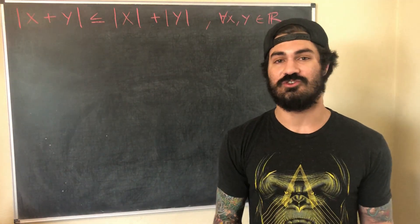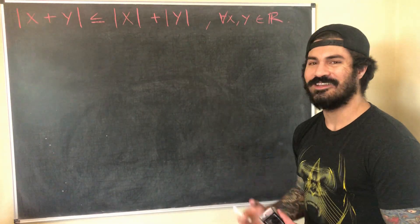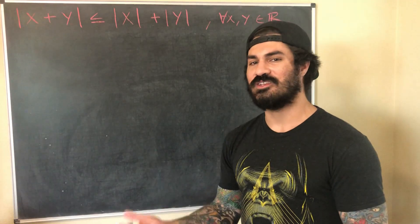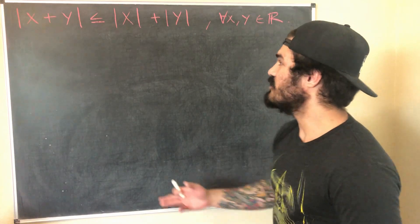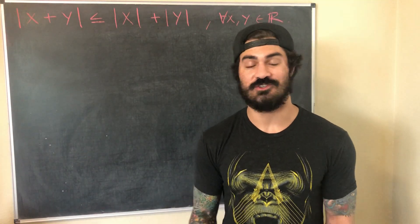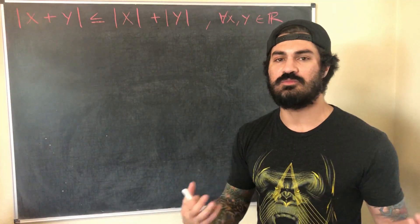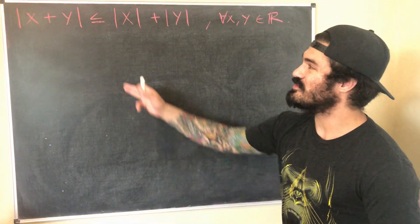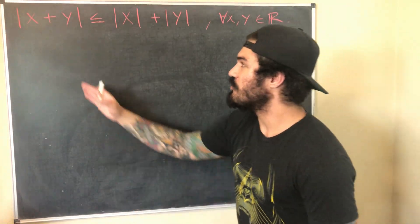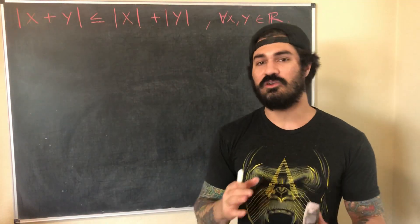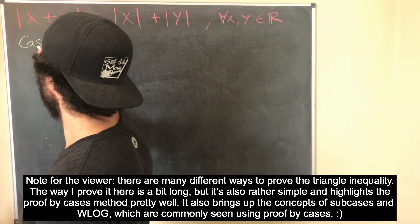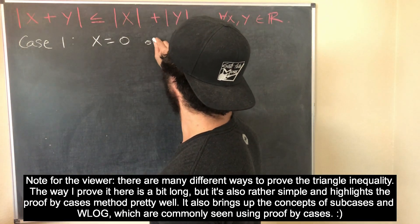In this case, our cases will be things like x > 0 and y > 0, or x < 0 and y < 0. We break into those cases because it tells us whether x + y is positive or negative, allowing us to apply the definition of absolute value for each case. Also note there's a less-than-or-equal sign, so showing equality or strict inequality either one is sufficient.